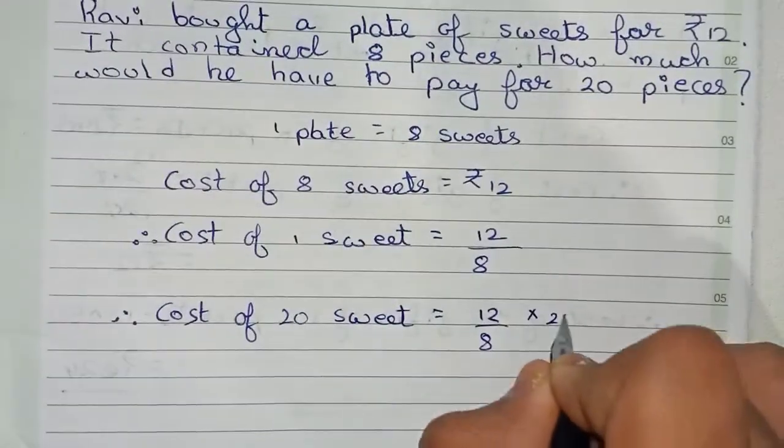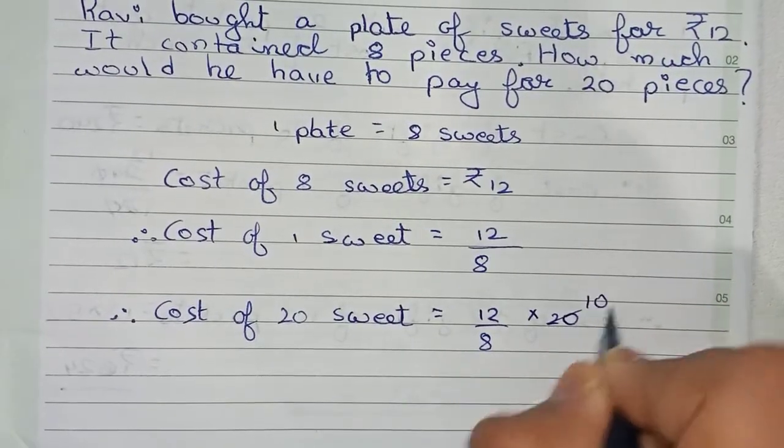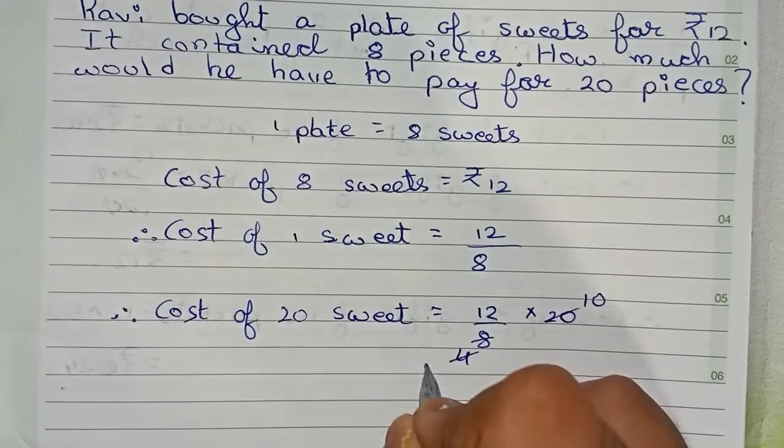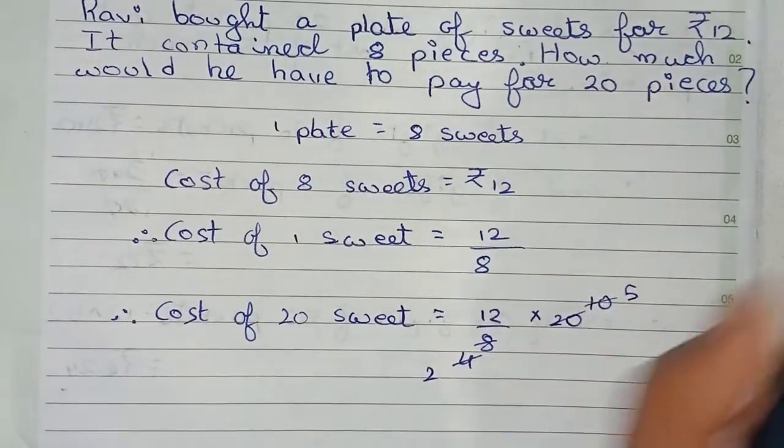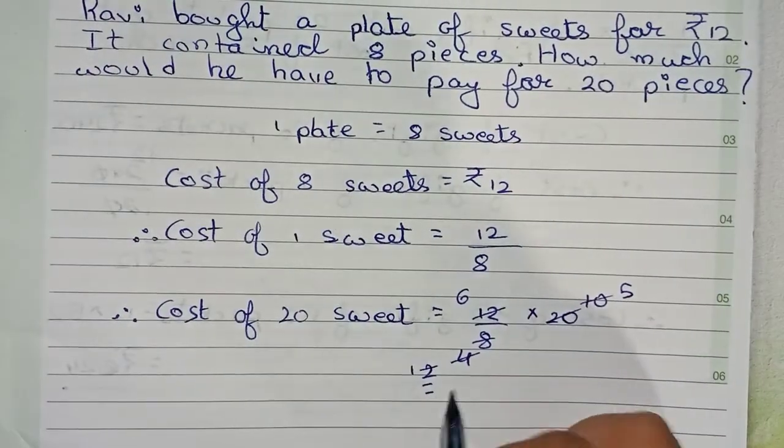So first you cut by 2, again by 2 it will become 5. Now 2 and 12, it will become 6, so it becomes 6 into 5.